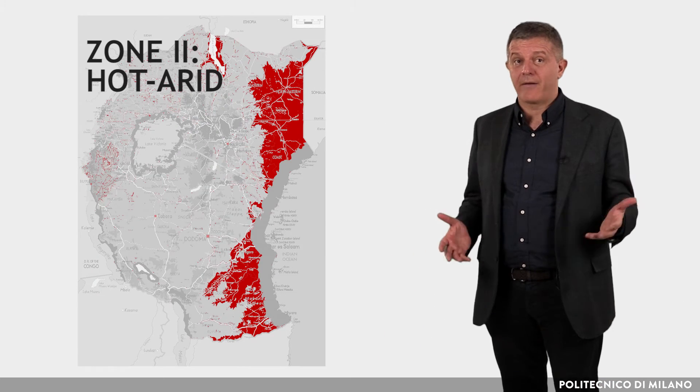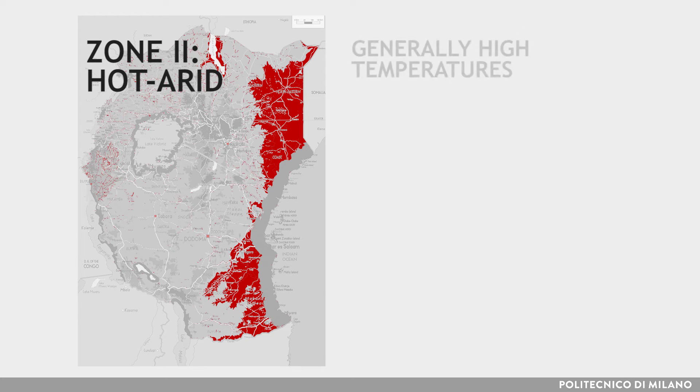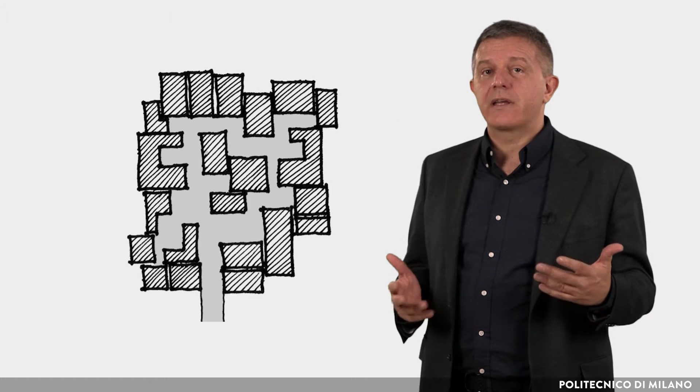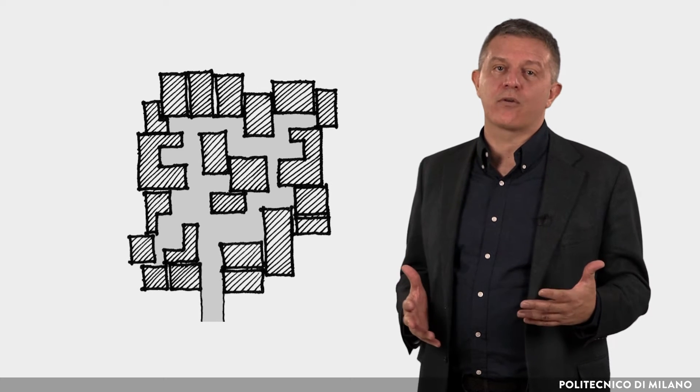Zone 2, hot-arid. In this zone, maximum temperatures are higher than those of the hot-humid climate, and high is also the daily temperature variation. Humidity, especially in the hottest hours, is very low. Housing layouts should be in compact urban form. Compact blending minimizes the solar exposure of individual houses and reduces solar heat gains by providing mutual shading and by reducing external surface areas.